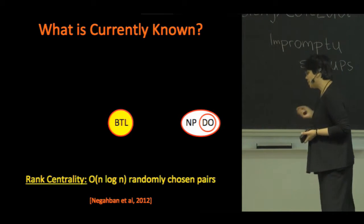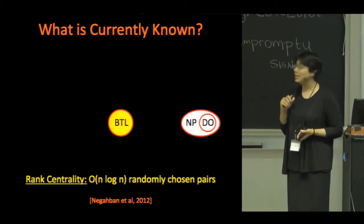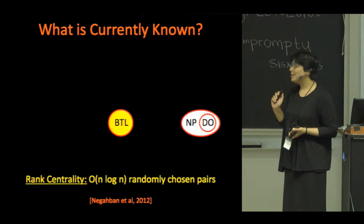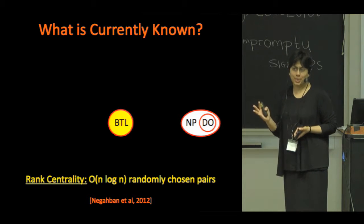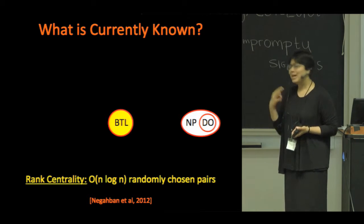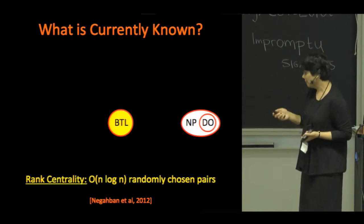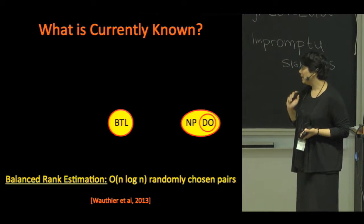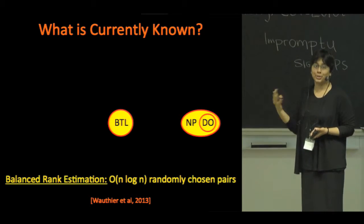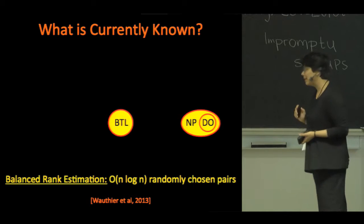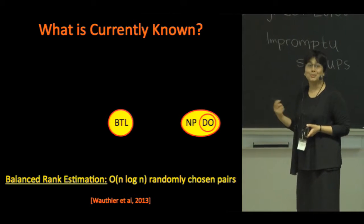Recently, in 2012, Negahban and colleagues proposed a spectral ranking algorithm called rank centrality, and they showed that under the BTL model, comparing just N log N randomly chosen pairs each roughly log N times suffices to accurately estimate the BTL scores and therefore construct a good ranking. Another recent work showed that under the noisy permutation model, a simple algorithm called balanced rank estimation, which ranks items by their border scores, achieves something similar. Our interest here is in understanding what broader conditions on the pairwise model allow us to show similar results.